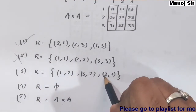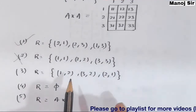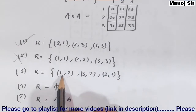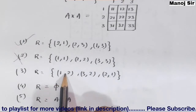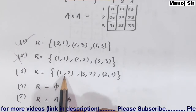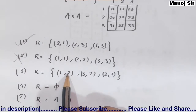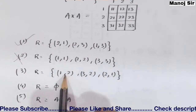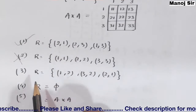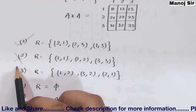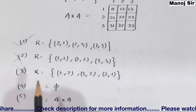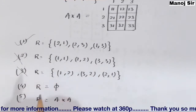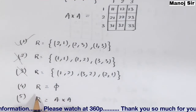Third example: R = {(1,2), (3,2), (2,1)}. Here, (1,2) is present and (2,1) is also present — that means the symmetric pair of (1,2) is in the relation. So this relation is not an asymmetric relation.